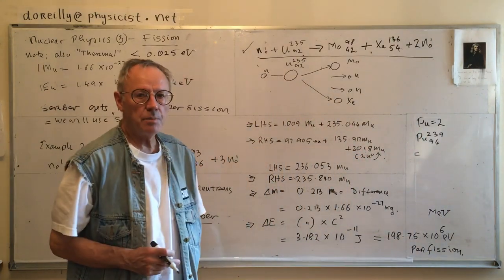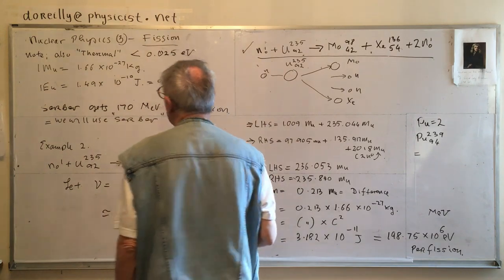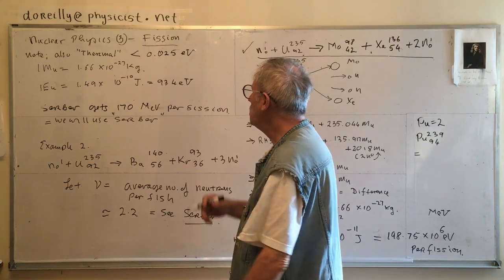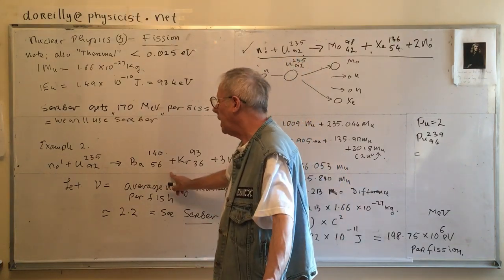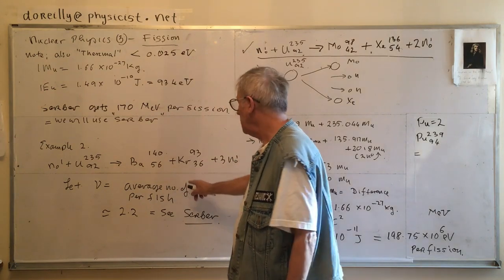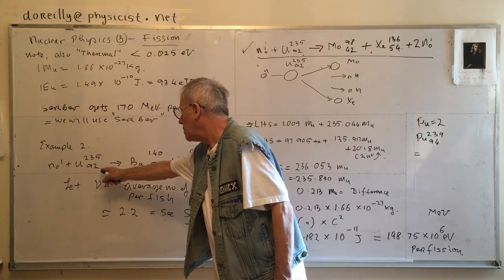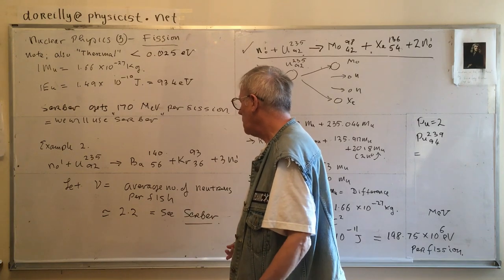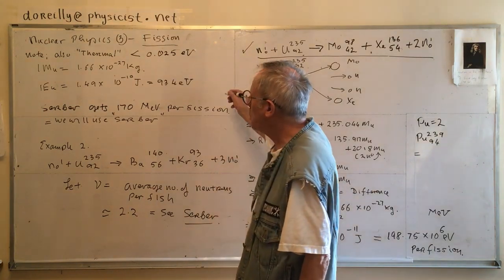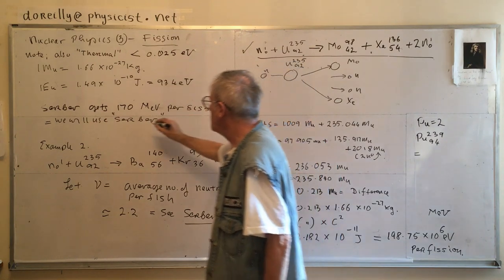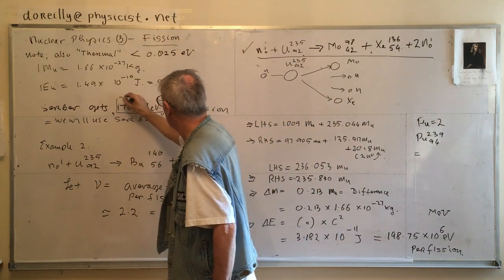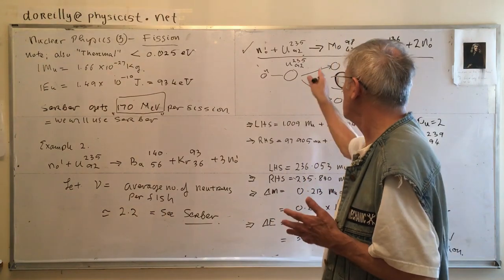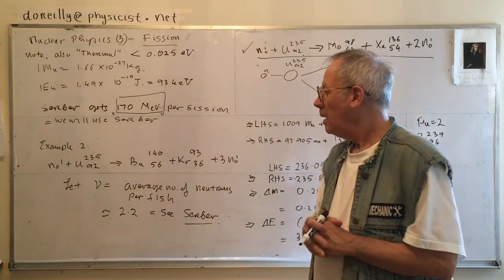That's the energy per fission for this reaction. Serber in his little book may use a different reaction — you can add up the mass units on the left and right, find the difference, and convert to energy. He gets 170 MeV per fission; we get about 199 MeV. Either way it's close to 200 MeV per fission for U-235-92, and we'll continue with our value.